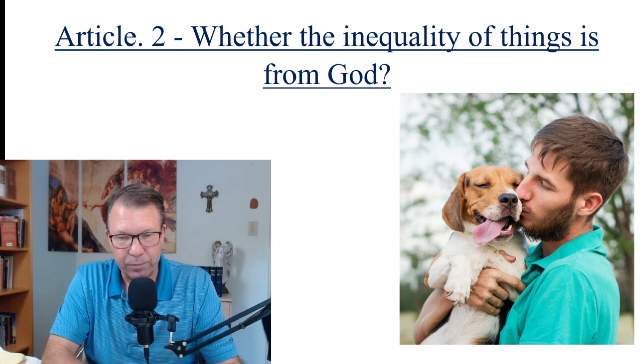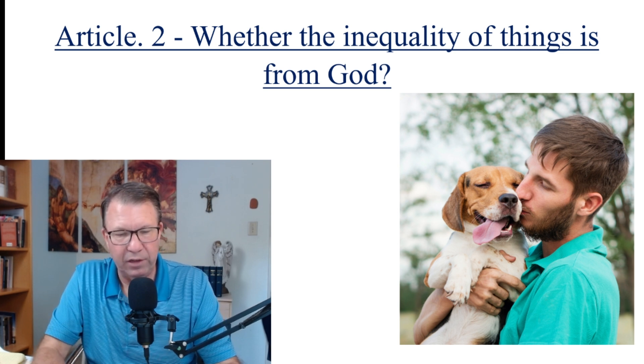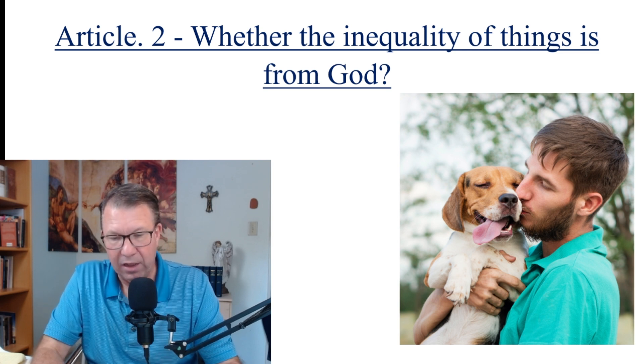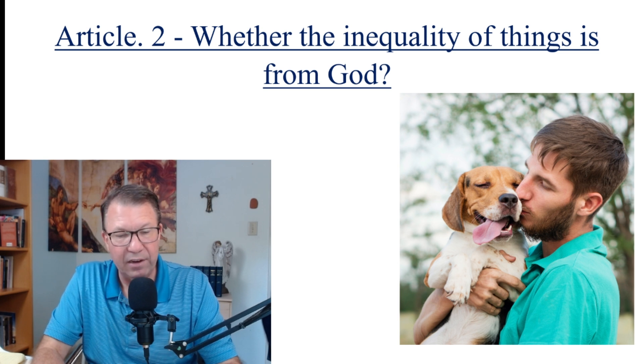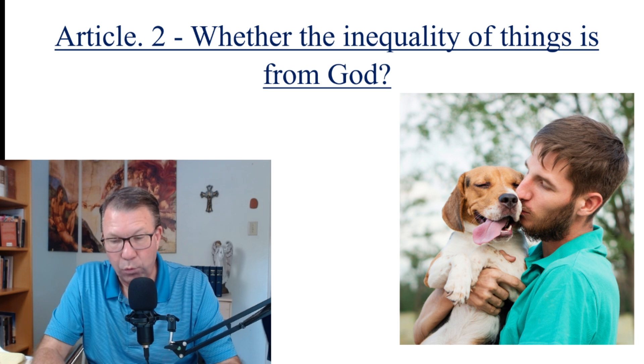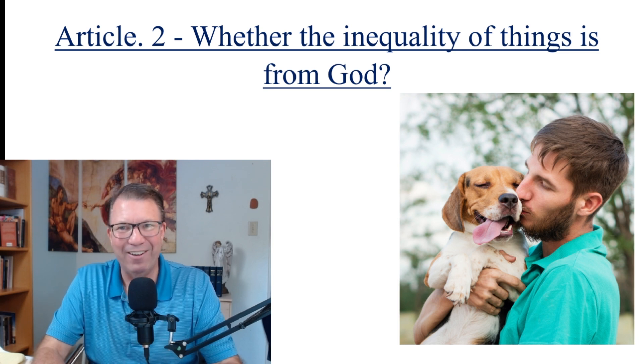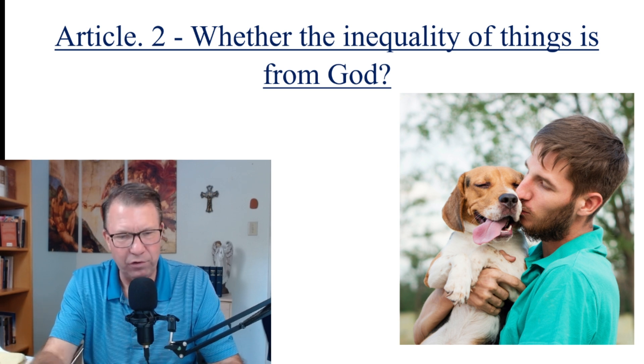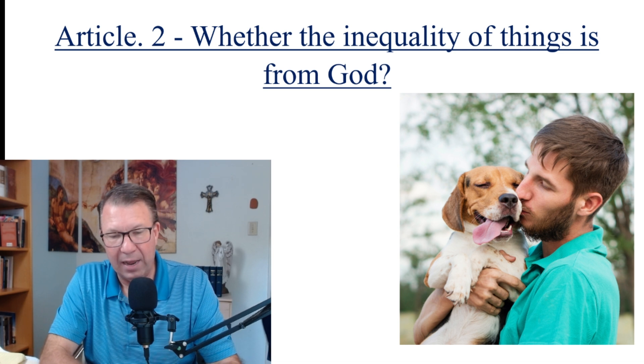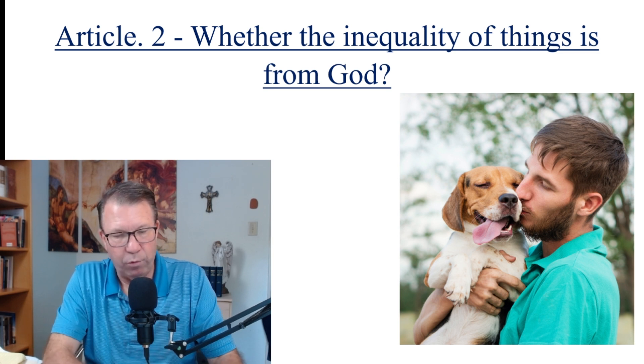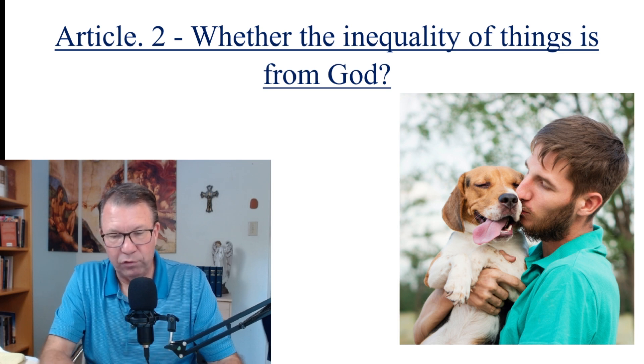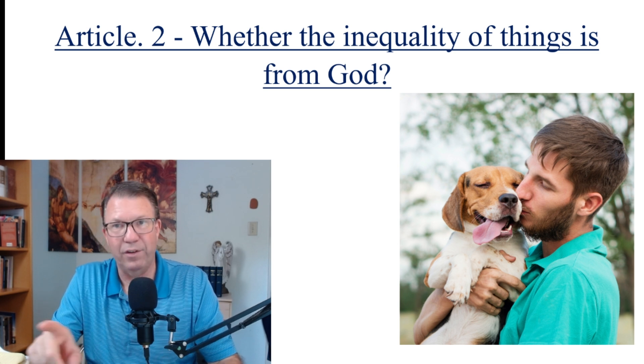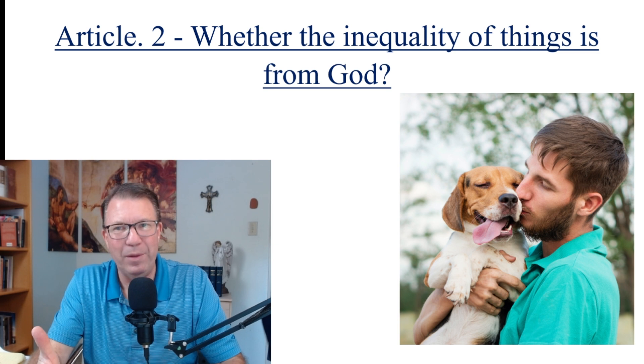When Origen wished to refute those who said that the distinction of things arose from the contrary principles of good and evil, he said that in the beginning, all things were created equal by God, for he asserted that God first created only the rational creatures and all were equal and that inequality arose in them from free will. So God created man, rational creatures, and gave him free will. Now, listen to what Origen says next. Some being turned toward God more and some less and others turned more and others less away from God. And so those rational creatures which were turned to God by free will were promoted to the order of angels according to the diversity of merits.